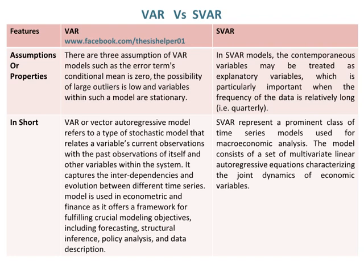In short, VAR, or vector auto-regressive model, refers to a type of stochastic model that relates a variable's current observations with the past observations of itself and other variables within the system. It captures the interdependencies and evolution between different time series, and is used in econometrics and finance for forecasting, structural inference, policy analysis, and data description. Whereas, SVAR represents a prominent class of time series models used for macroeconomic analysis, consisting of a set of multivariate linear auto-regressive equations characterising the joint dynamics of economic variables.